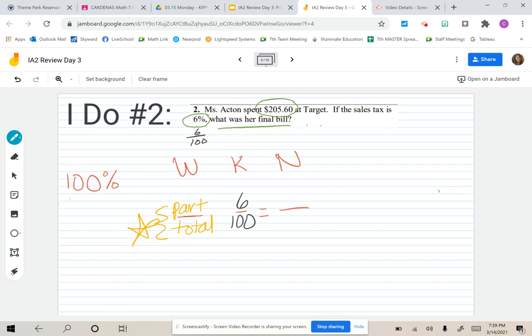What we need to find is her final bill. This is tricky because the final bill is not actually the 6%. We have to think about: if we find 6%, the sales tax, then what would we do to find her final bill?